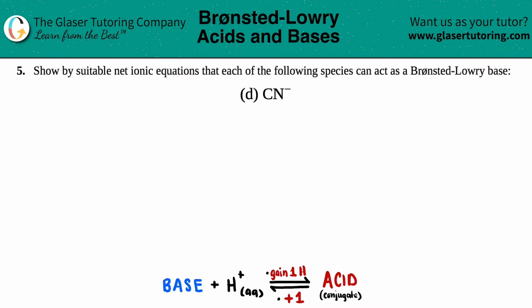Number five: show by suitable net ionic equations that each of the following species can act as a Bronsted-Lowry base. And then we have letter D. So in this case, we need a net ionic equation just showing that CN⁻ is a Bronsted-Lowry base.